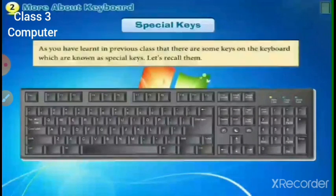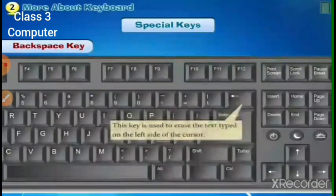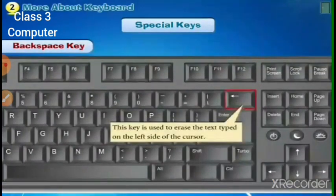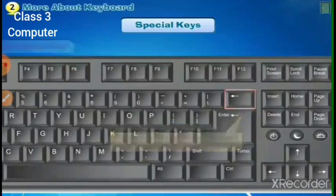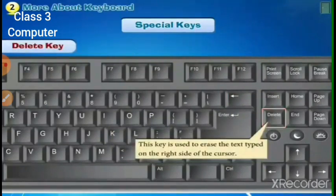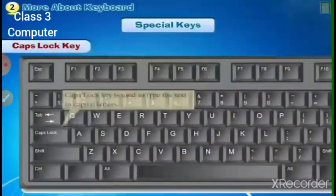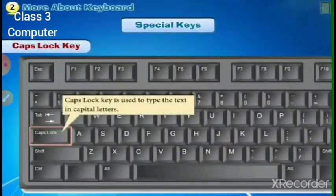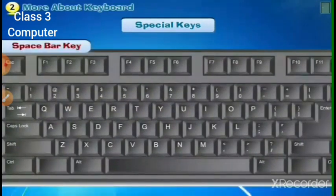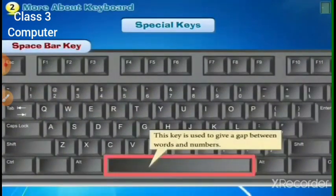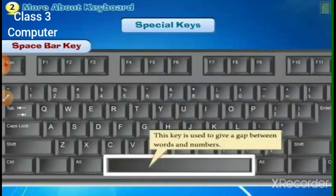Special keys on the keyboard: the backspace key is used to erase text typed on the left side of the cursor. The delete key is used to erase text typed on the right side of the cursor. Caps Lock key is used to type text in capital letters. The spacebar key is used to give a gap between words or numbers.